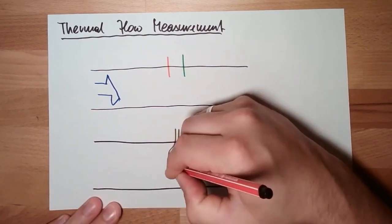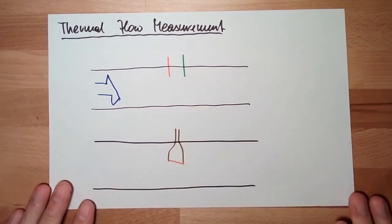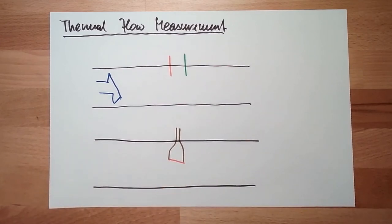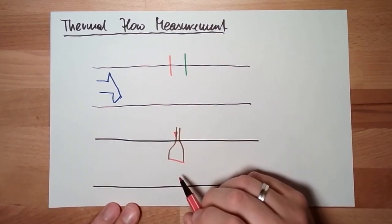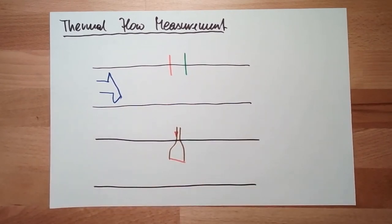There is a heated part, a heated wire, and I measure the temperature of this wire. I want to keep this temperature constant, and I measure how much electrical power I have to put in to keep the wire temperature constant.